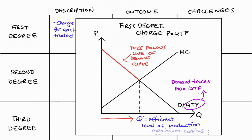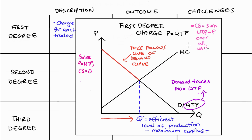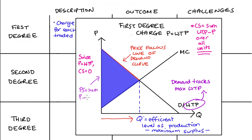This means that the surplus in this market is at a maximum and there will be no dead weight loss. Because price equals willingness to pay for each unit traded, consumer surplus will be zero — consumer surplus is the sum of differences between price and willingness to pay, and price equals willingness to pay. In fact, all of the surplus is producer surplus — the purple area on screen — which is price minus marginal cost summed over all units traded. So in first degree, all surplus goes to the producer.